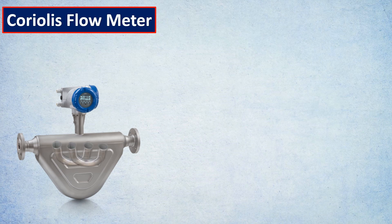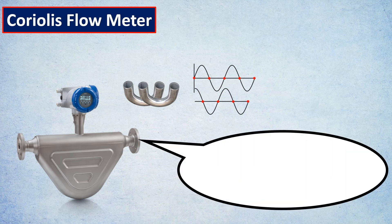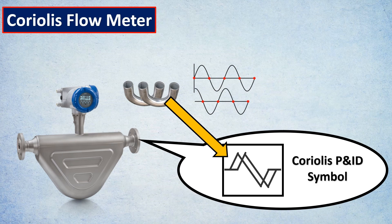For example, take Coriolis flow meter. It is basically two tubes vibrating together. The more out of phase they are, the higher is the flow. So engineers have done a smart thing. They have tried to mimic the tube, which is the most important part of a Coriolis flow meter, and here is the body of the meter. So this is the Coriolis P&ID symbol.